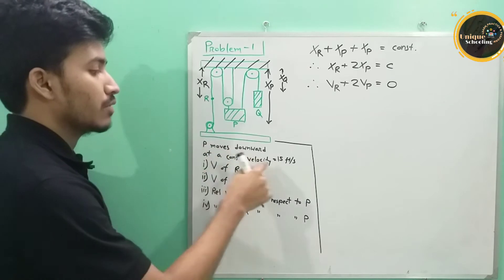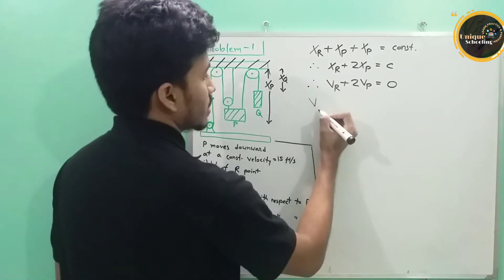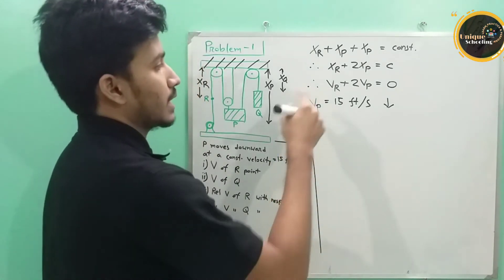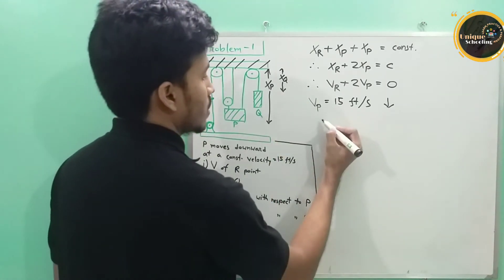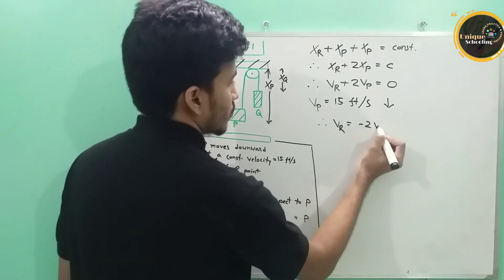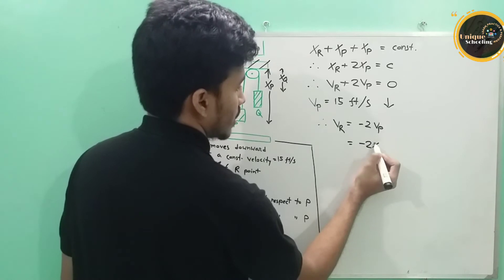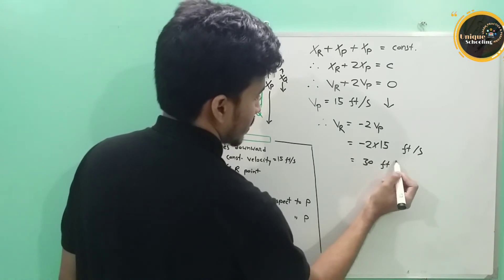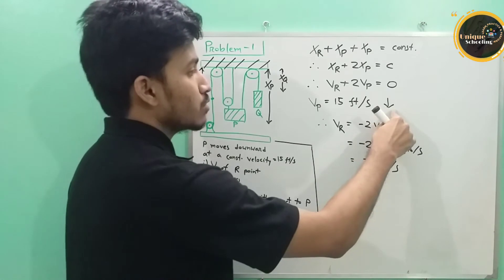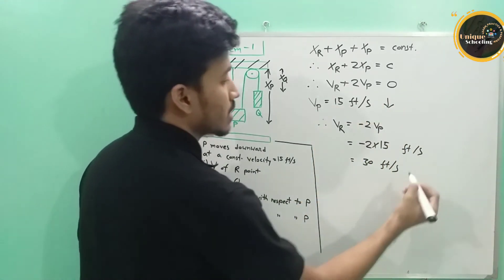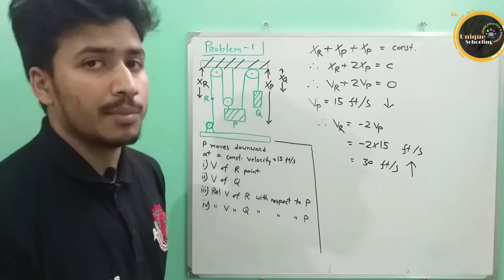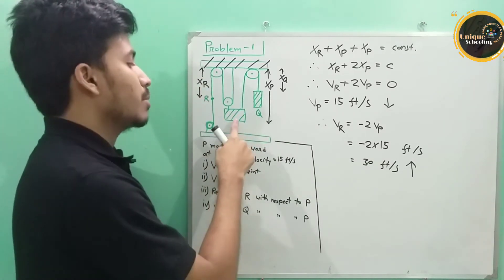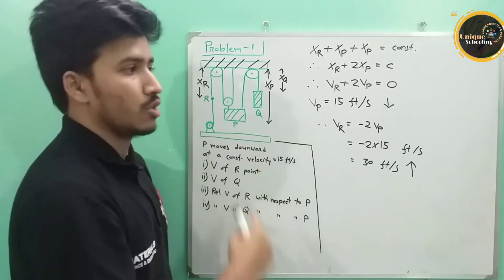The P block is moving at 15 feet per second, so vP is equal to 15 feet per second downward. Therefore, vR is equal to minus 2vP, which is minus 2 times 15 feet per second, equal to 30 feet per second upward.